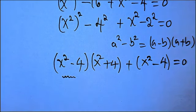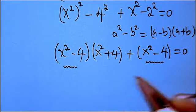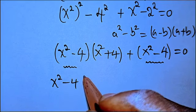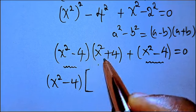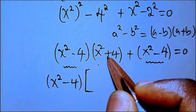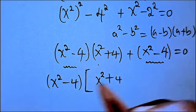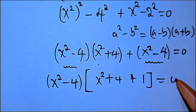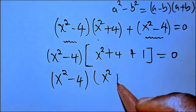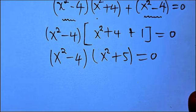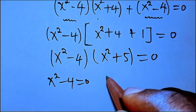Using the difference of two squares — a squared minus b squared equals a minus b times a plus b — we can factor this. We get x squared minus 4, times x squared plus 4, plus x squared minus 1, times x squared plus 1. Factoring out x squared minus 4, we get x squared minus 4 times x squared plus 5 equals zero.